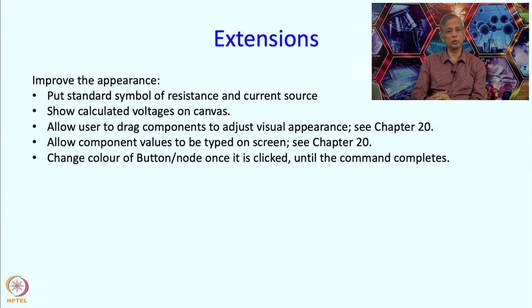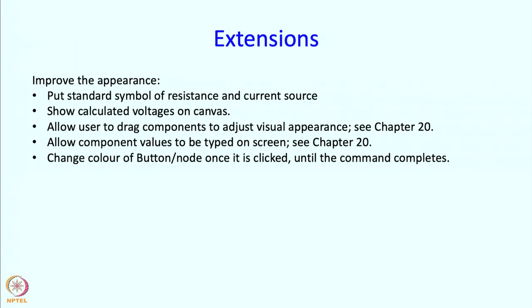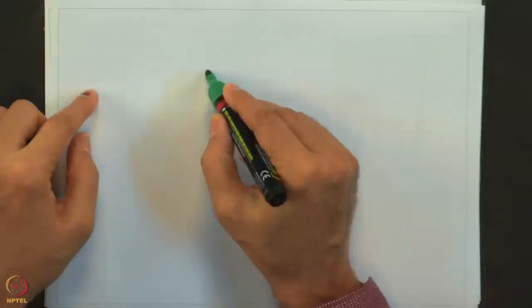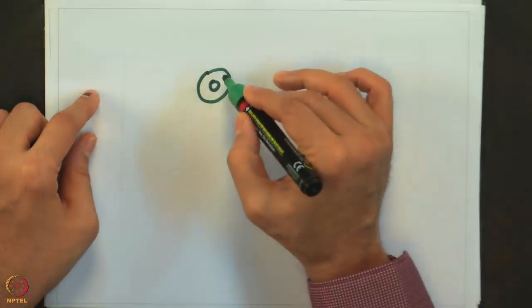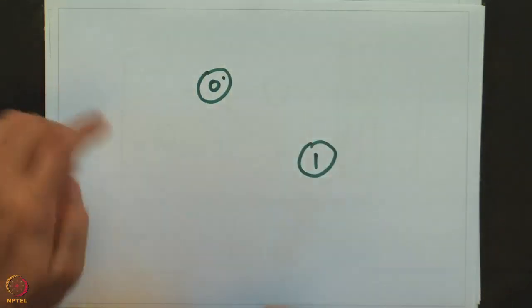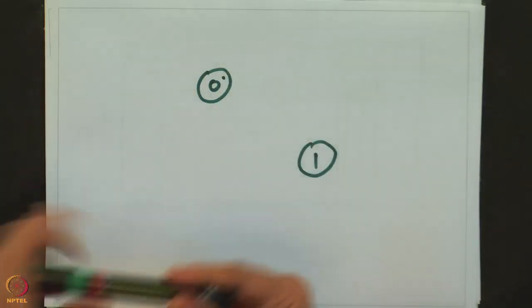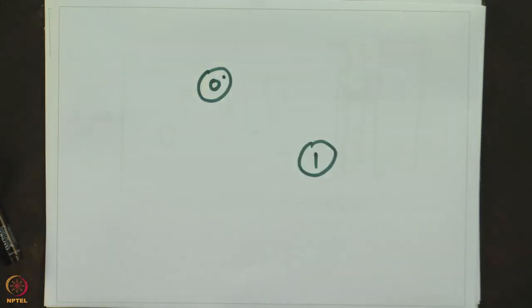Here is something you might have seen in nice CAD programs. If I have node 0 and node 1 and I click on node 0, a good program will change the color of that node to indicate that you just clicked on it. That way there is a visual cue telling you where you are, which makes it easier to use the program.